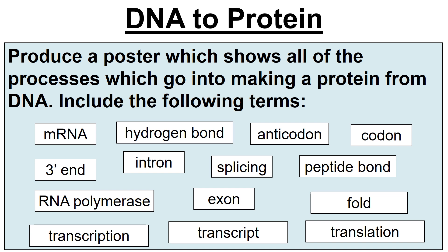Just to wrap this all up — if you've got a big A3 bit of paper, try and put it all together. Split it into three sections: transcription, then RNA splicing in the middle, then translation. Write it all out, draw it all out — diagrams work well for this. See if you can do that as a summary of everything you've been doing.